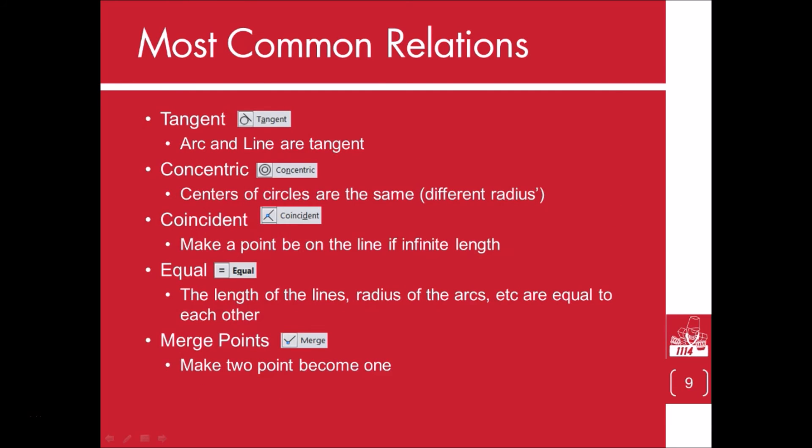Tangent will make an arc and a line tangent to each other. Concentric will make two or more arcs have the same center but not the same radius.